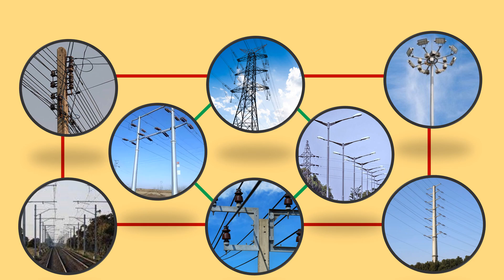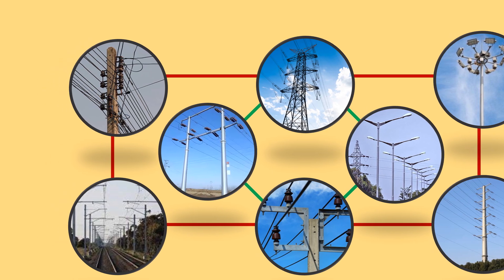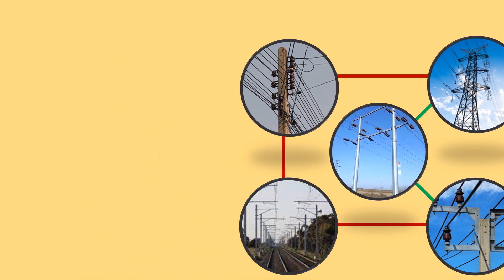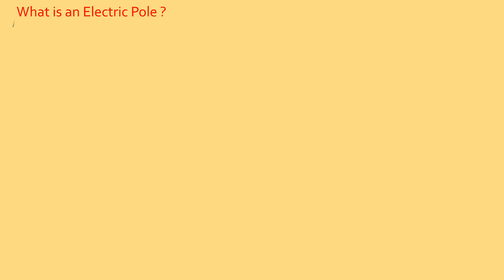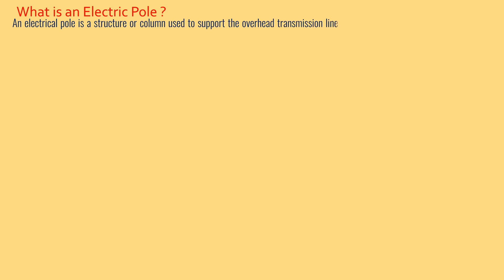The selection of poles will also depend upon the voltage, weather condition, area of erection, and the span of the line. An electric pole is a structure or column used to support the overhead transmission line, distribution line, electric cable, heavy cable, and equipment such as transformers and street lights.